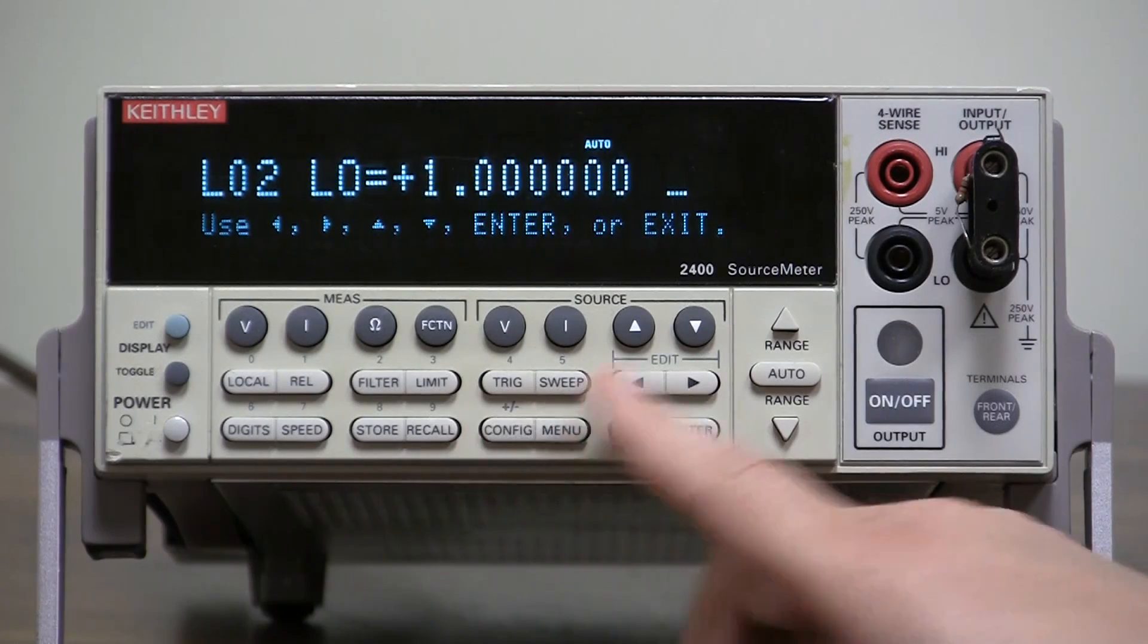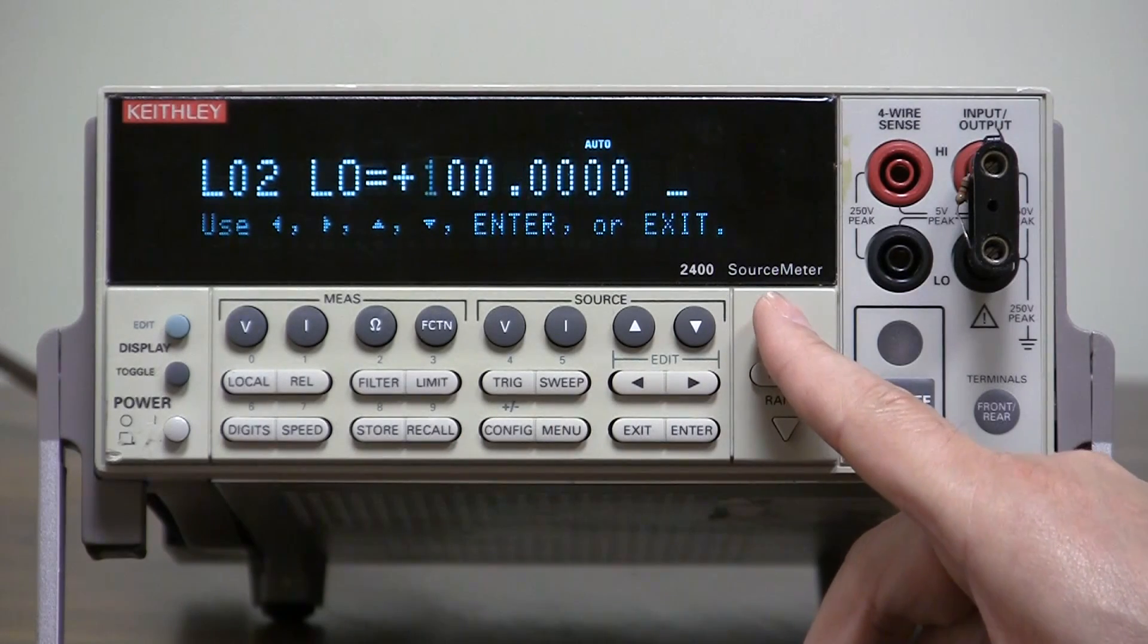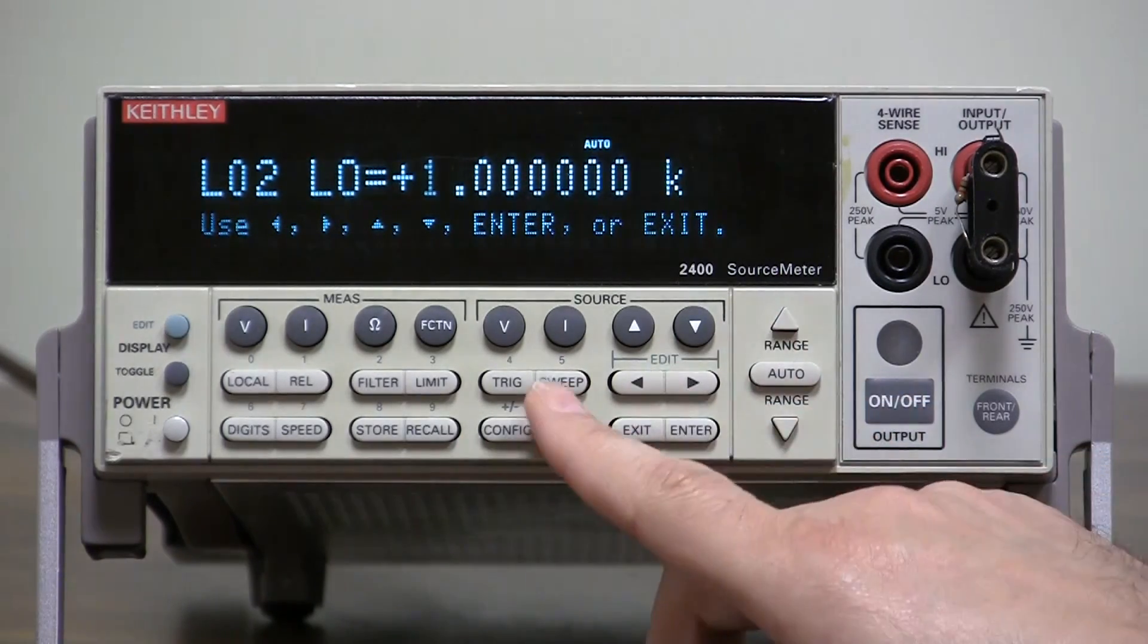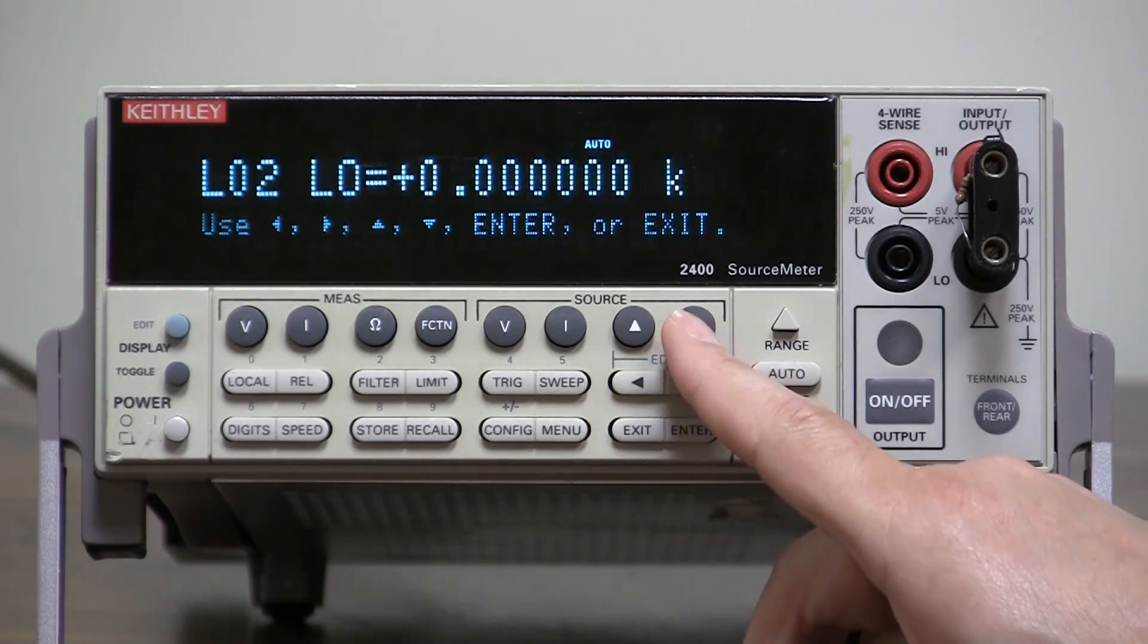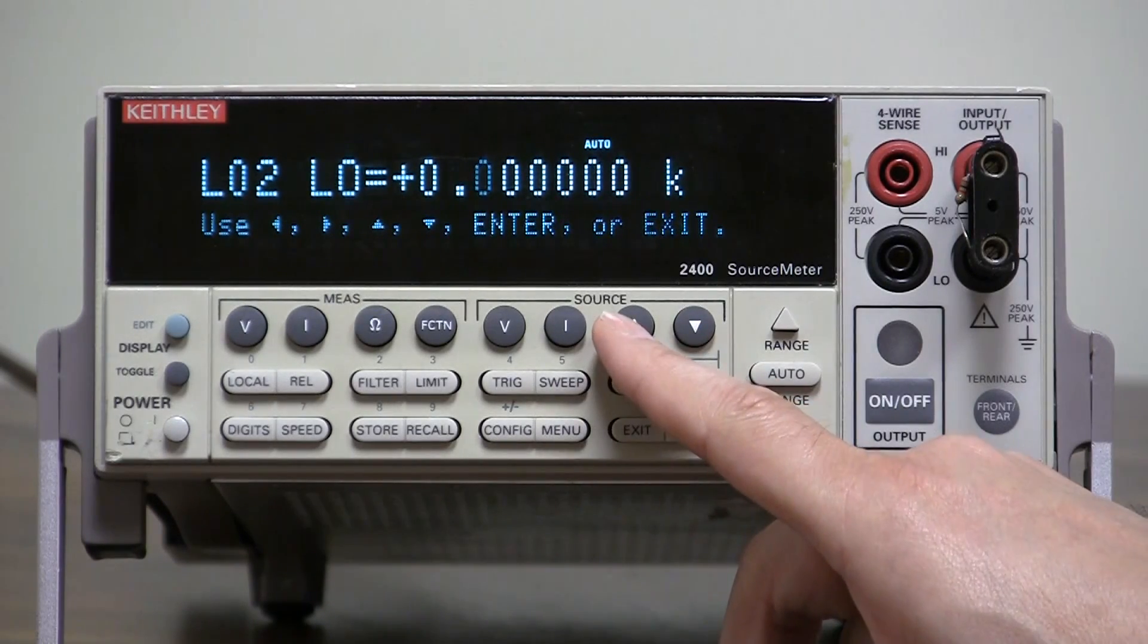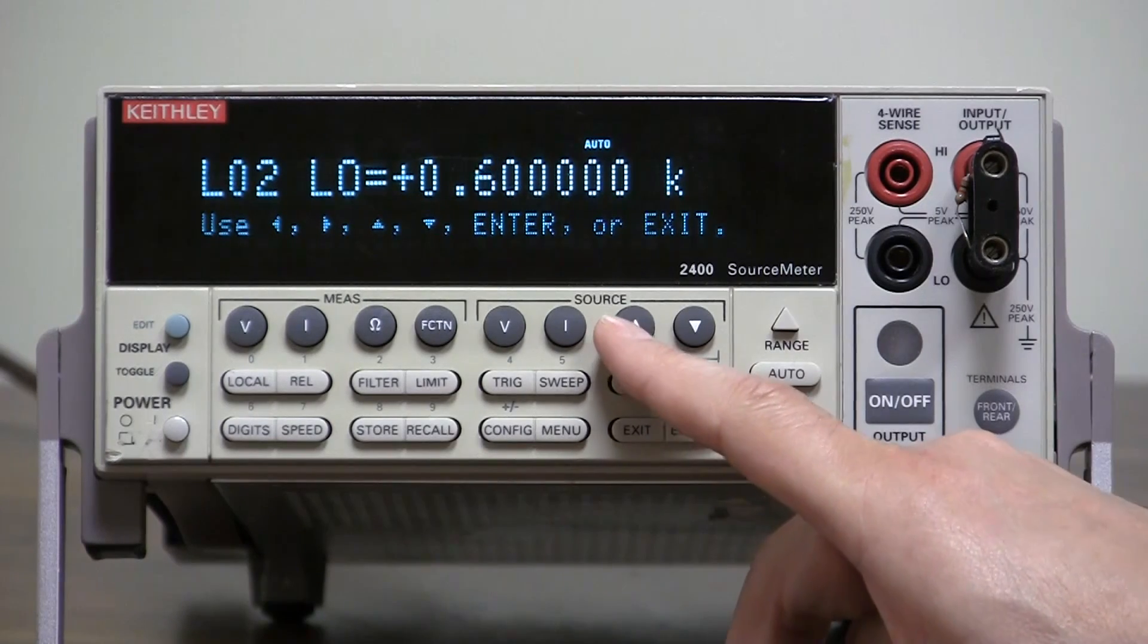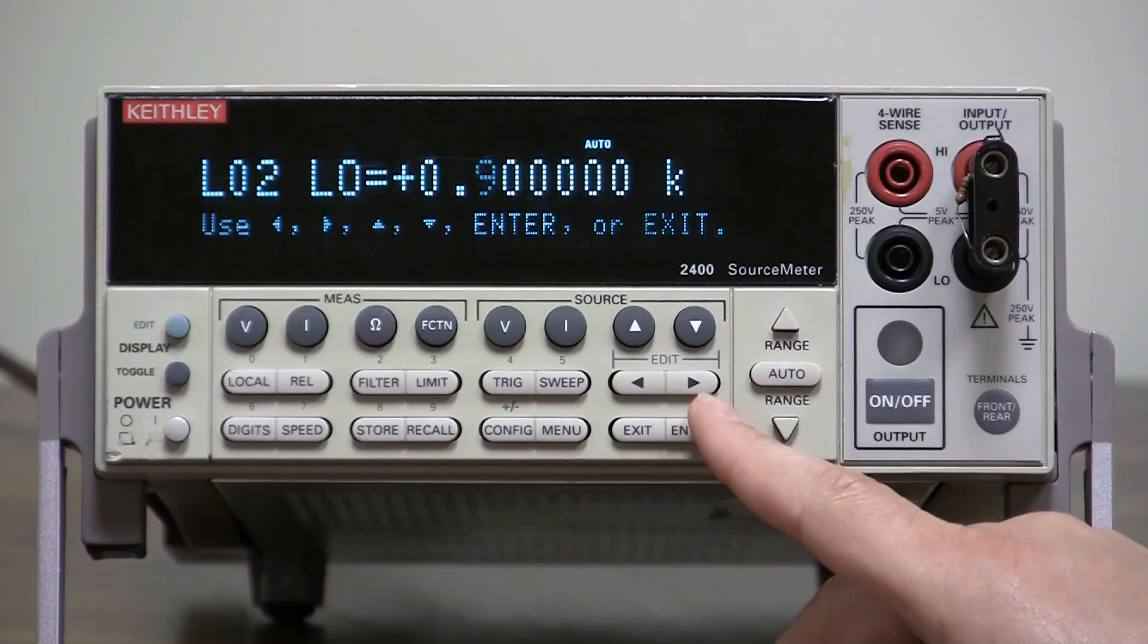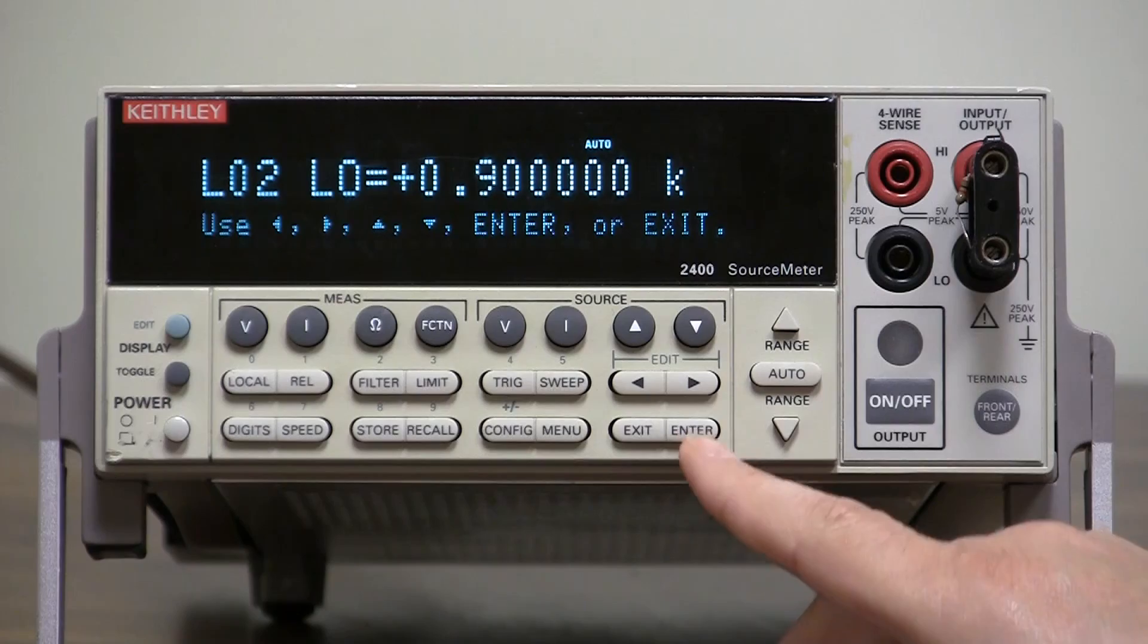We'll change it to plus, go to the range, go up to about 1K, down, over, let's just say 0.9K. That would be lower than what it is. So that's the low limit. Hit enter.